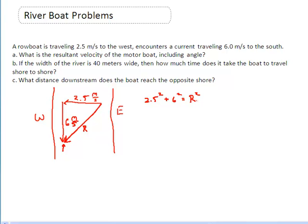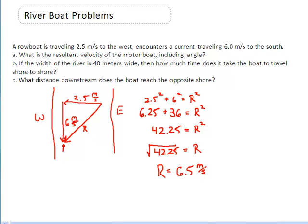Let's calculate this problem. 2.5 squared gives me 6.25; 6 squared gives me 36. Add them together and that equals 42.25. Now 42.25 equals R squared, so I need to take the square root to find the resultant. My resultant velocity is 6.5 meters per second. That makes sense — it's definitely greater than either component: 6 meters per second south and 2.5 meters per second west.